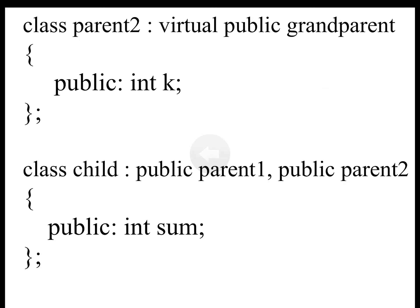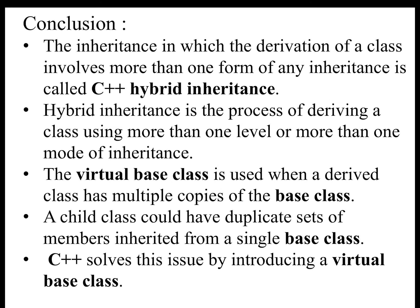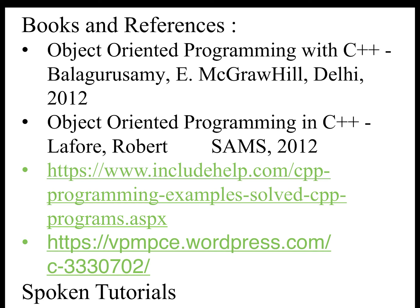To avoid ambiguities, we declare the class as virtual — this is called the Virtual Base Class. In conclusion, inheritance in which the derivation of a class involves more than one form of inheritance is called C++ Hybrid Inheritance. Hybrid inheritance is the process of deriving a class using more than one level or mode of inheritance. The Virtual Base Class is used whenever a derived class has multiple copies of the base class — C++ solves this issue by introducing a Virtual Base Class. These are the books and references you can refer to. Thank you.